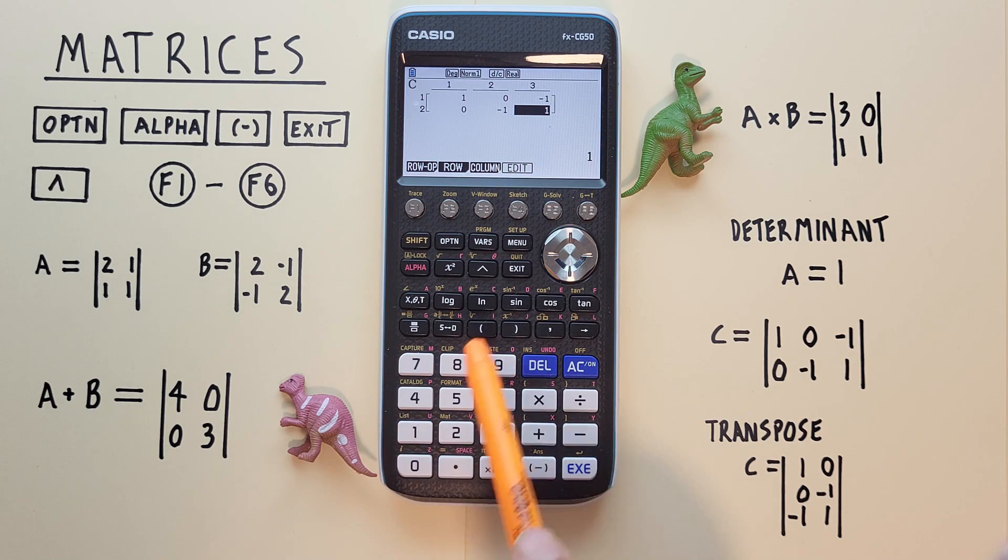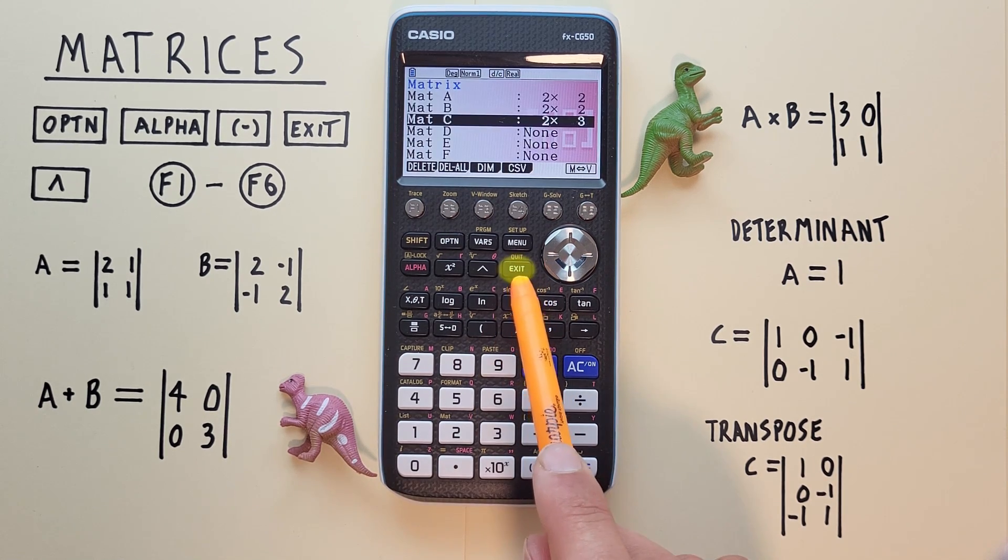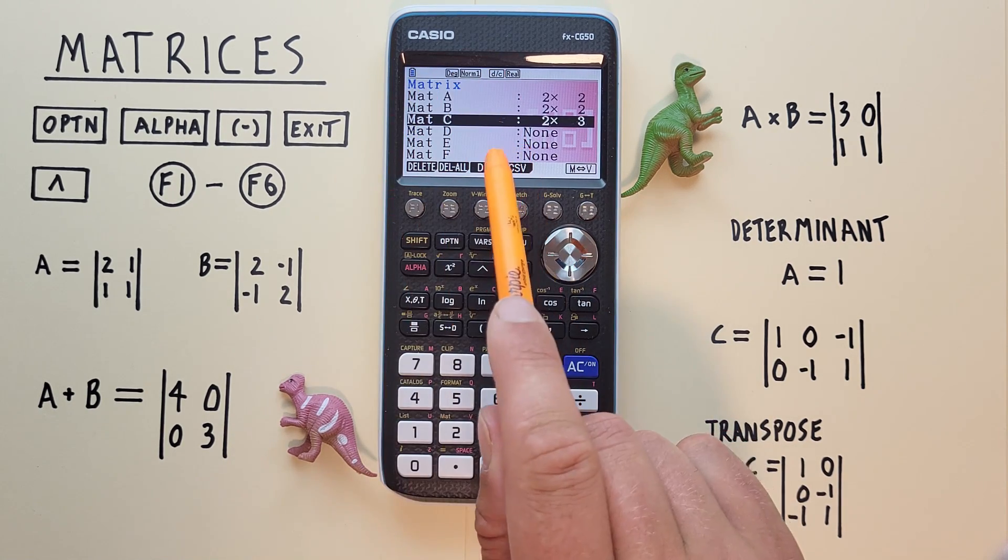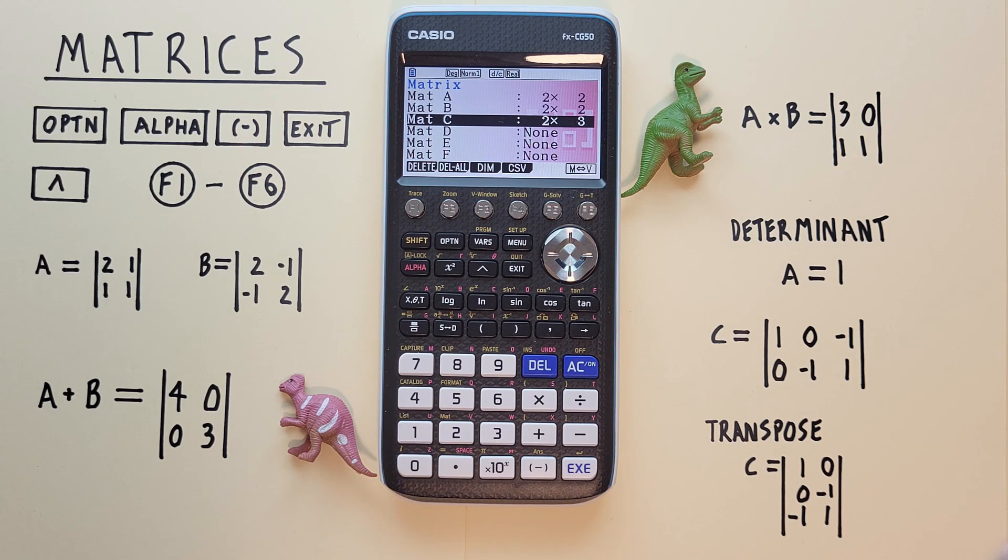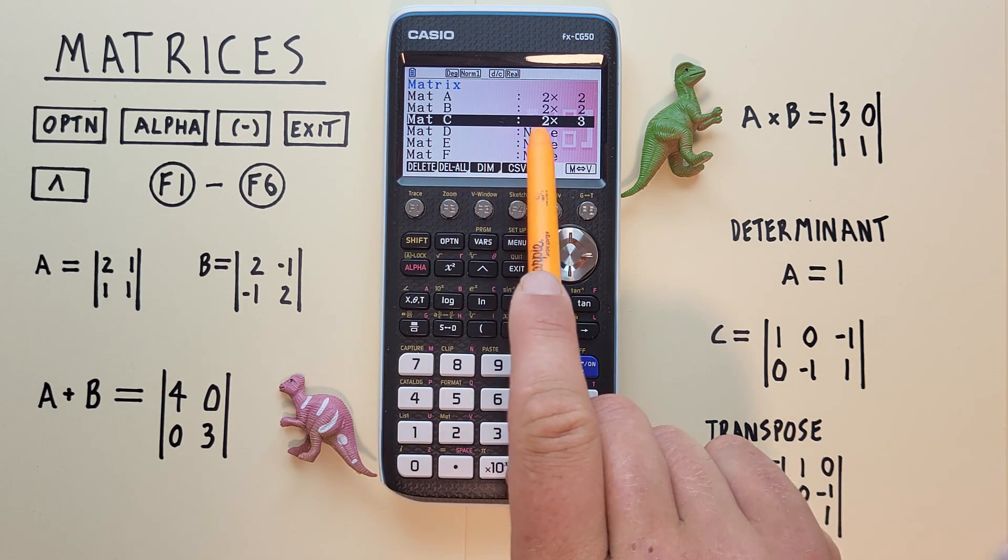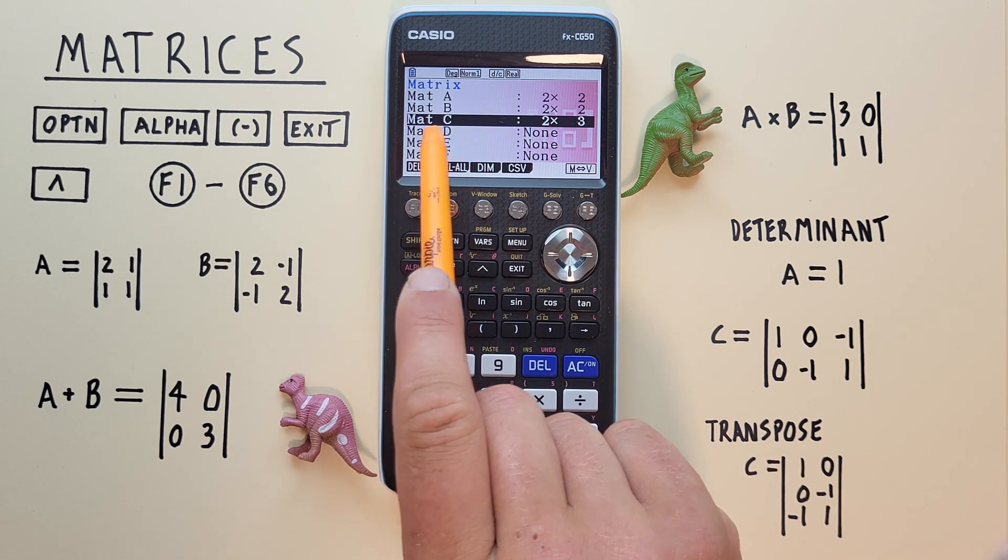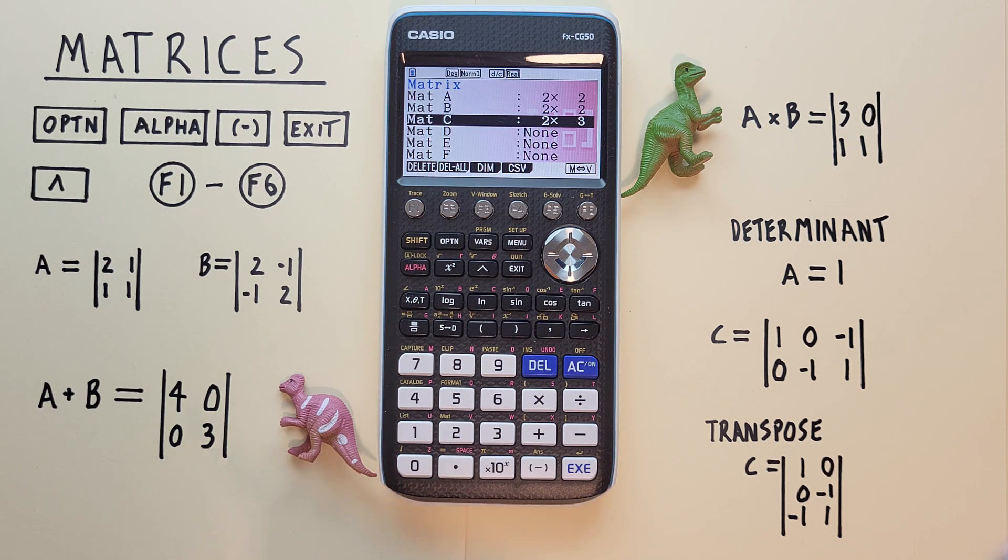We can go back with the exit key to our matrix menu, and we see now we have a 2 by 3 matrix stored in our matrix C slot, and back to the main screen with the exit key.